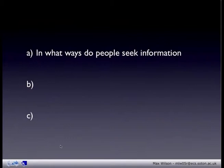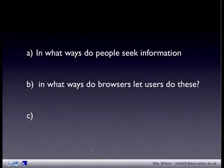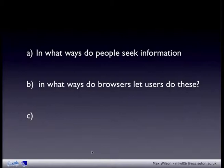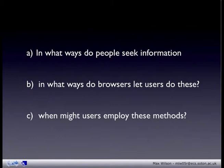First, in what ways do people seek information? Then, in what ways do browsers let users do these things? And third, when might a user employ these methods? When looking at the first of these, we came across Bates' model from 1990 on user search strategies.